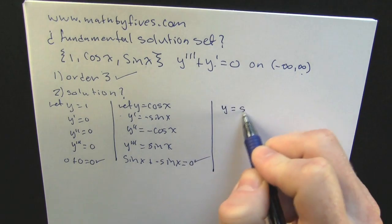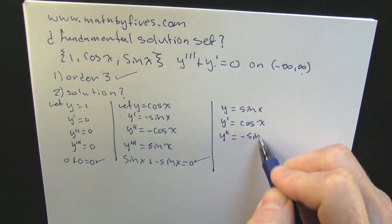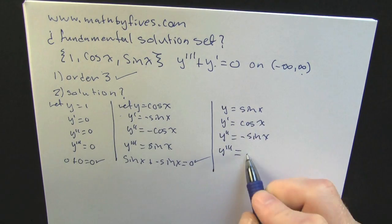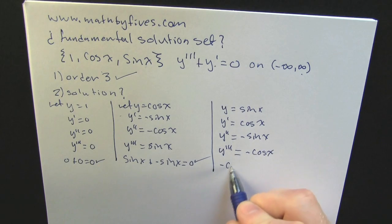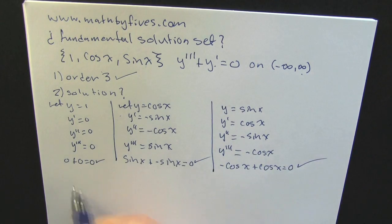Similarly, he's checking that last one, the sine of x. Not once, not twice, but thrice differentiating it, plugging it into the original DE, and we'll see whether or not that is going to be a solution. Not one, not two, but all three are solutions.